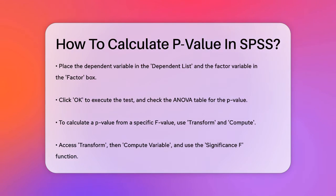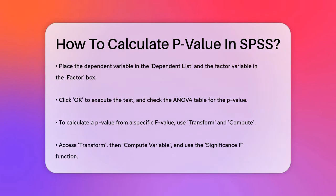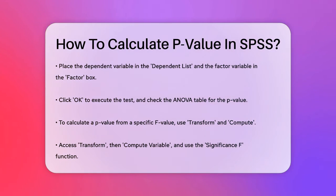If you need to calculate a p-value for a specific f-value and degrees of freedom, you can use the Transform and Compute functions in SPSS. Go to Transform and Compute Variable, where you can use the Significance f function. Input your f-value and degrees of freedom, and SPSS will create a new variable with the calculated p-value.